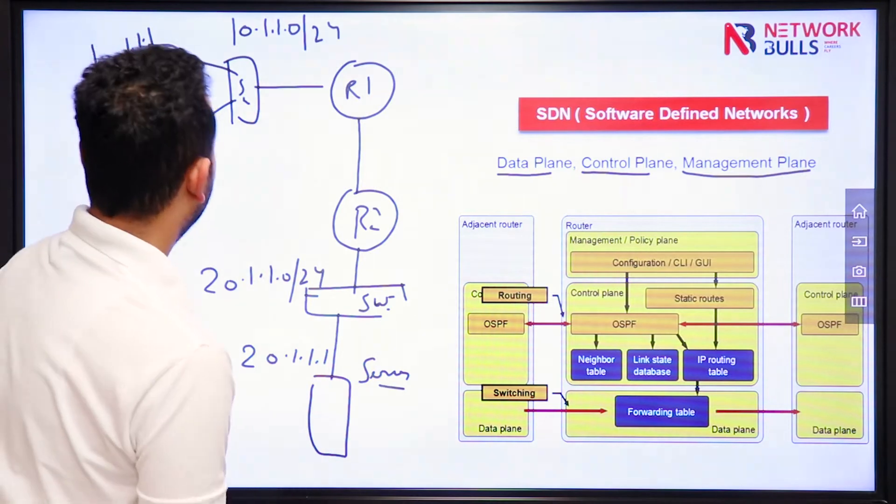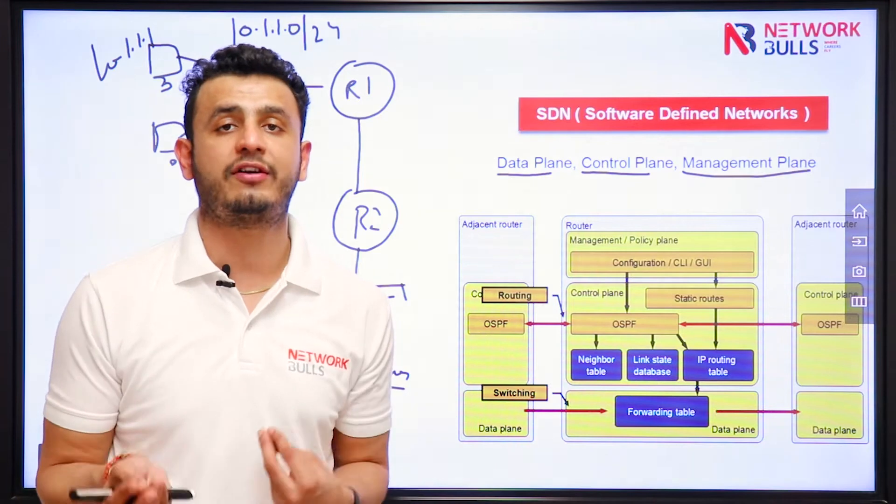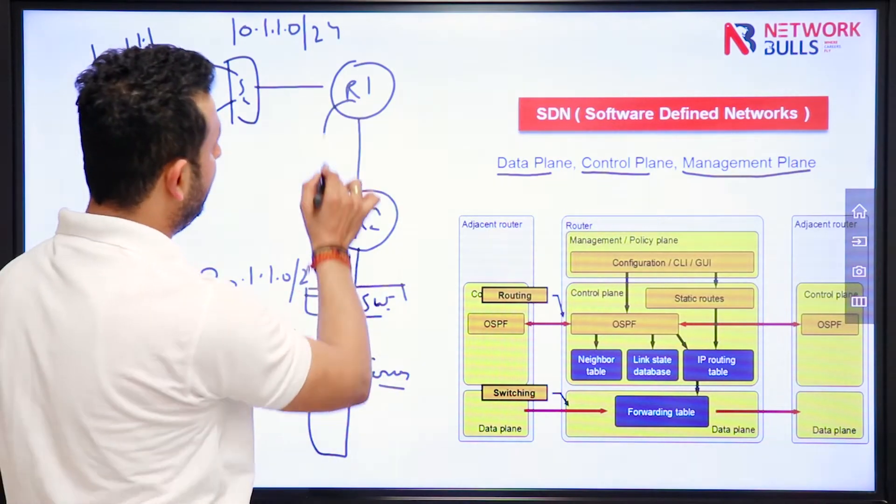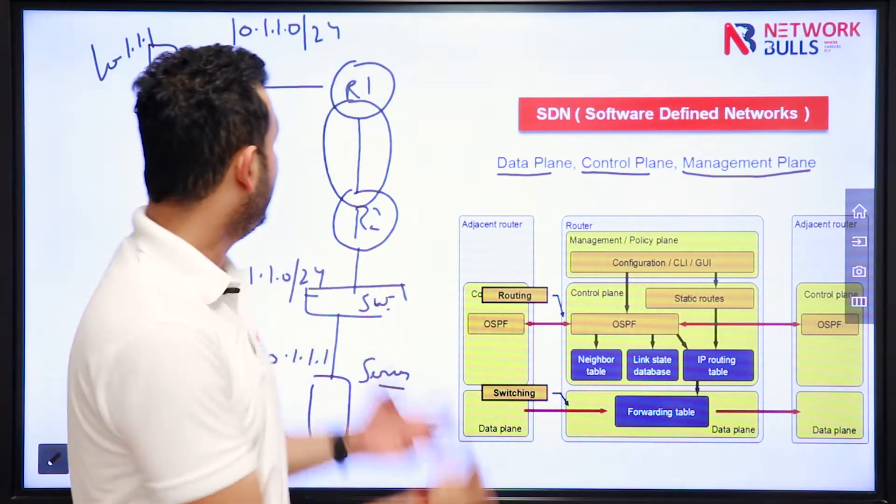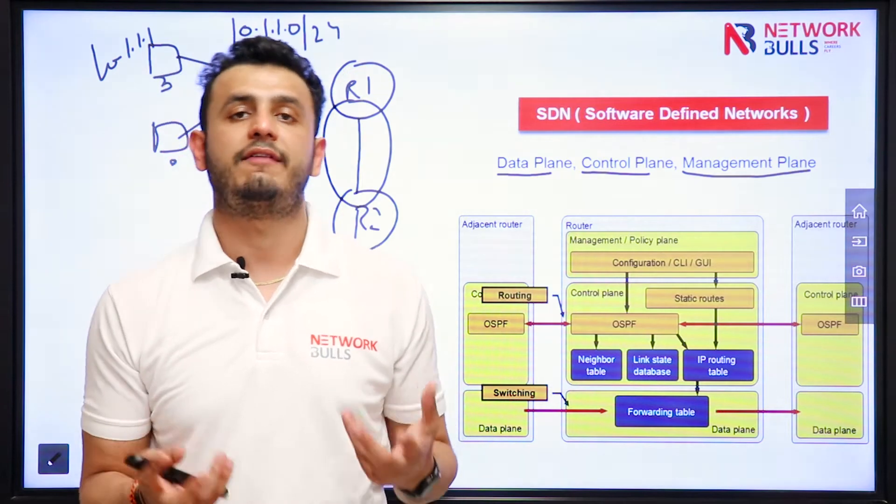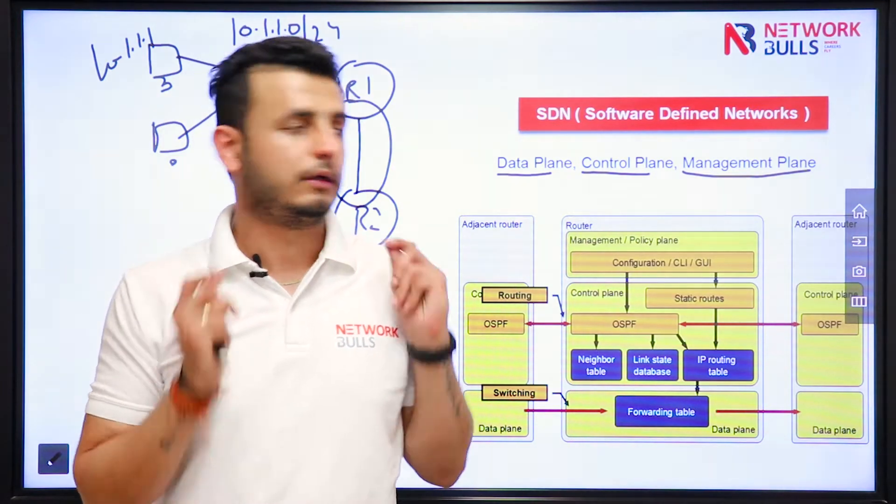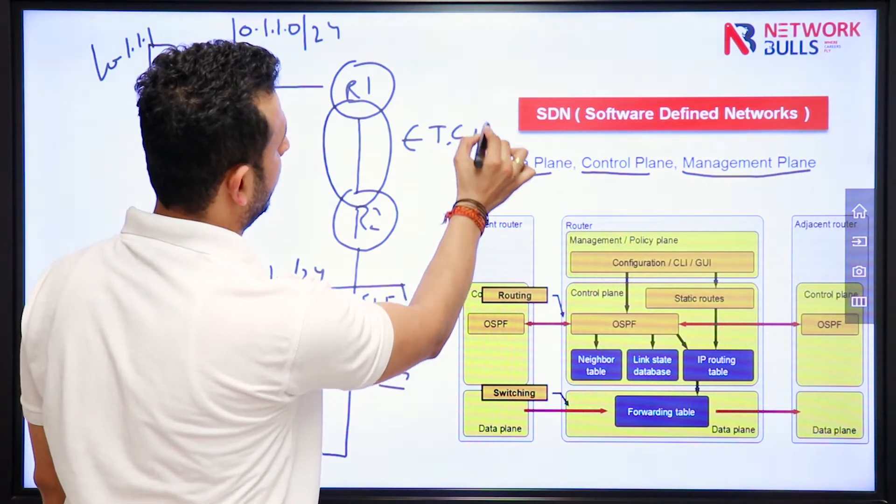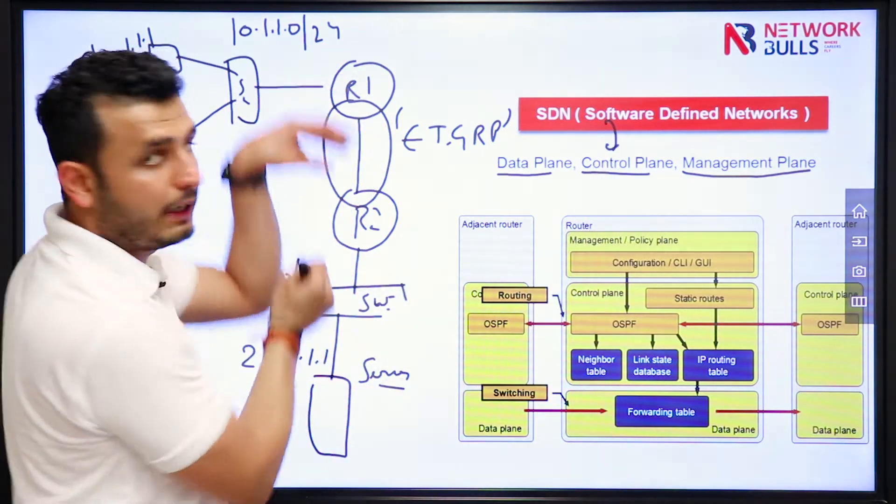Now, if I talk about control plane, control plane means traffic generated by the box and to the box. For example, to make this communication possible, I can run here a dynamic routing protocol like EIGRP OSPF. So what routers will do, they will exchange hellos, they will form neighborship, they will achieve adjacency, after that they will exchange updates, they will form their routing table. EIGRP is actually a control plane protocol which is used to build a routing table.